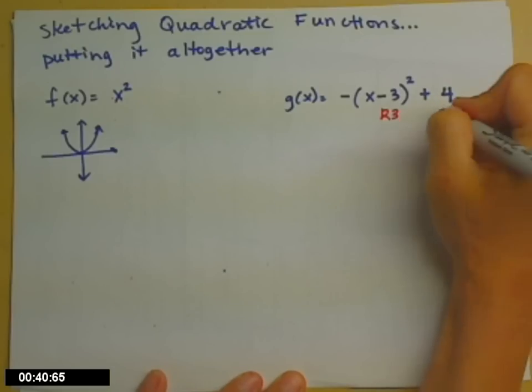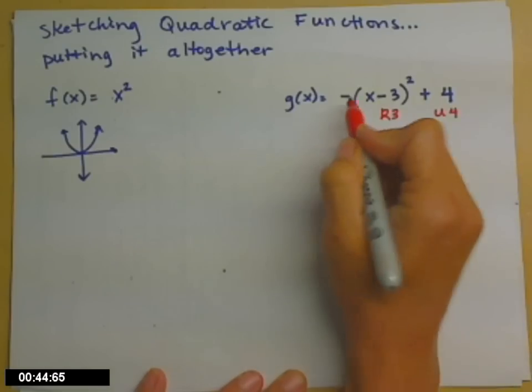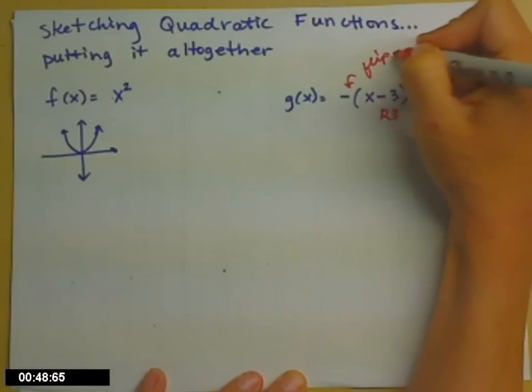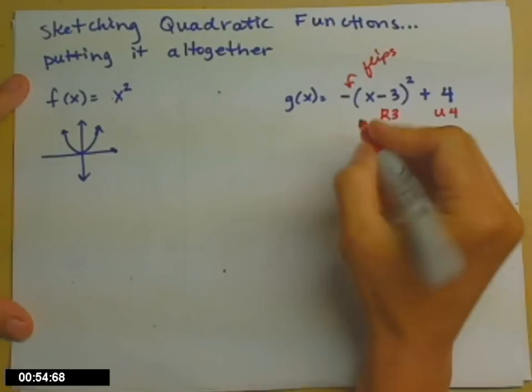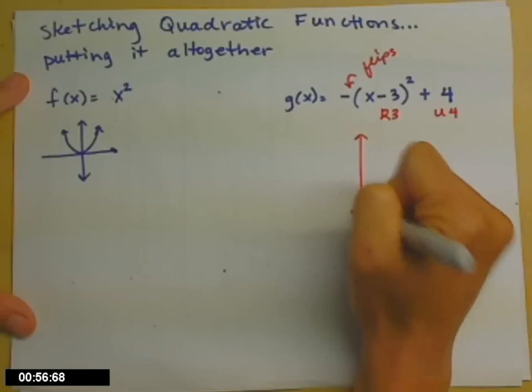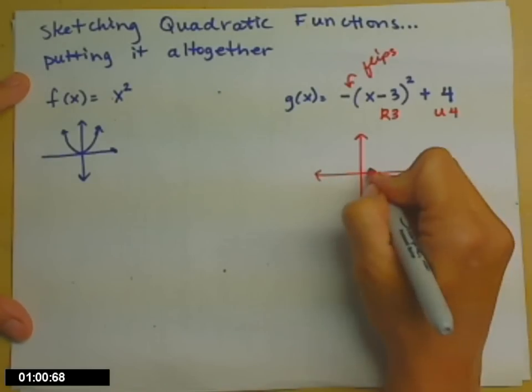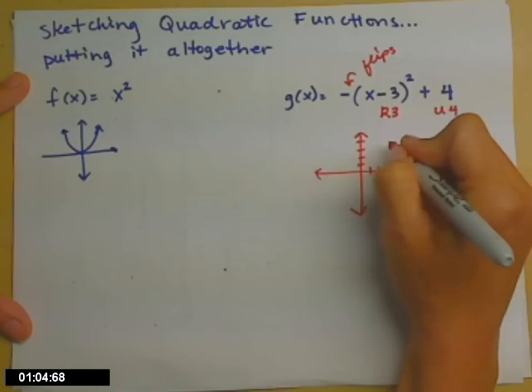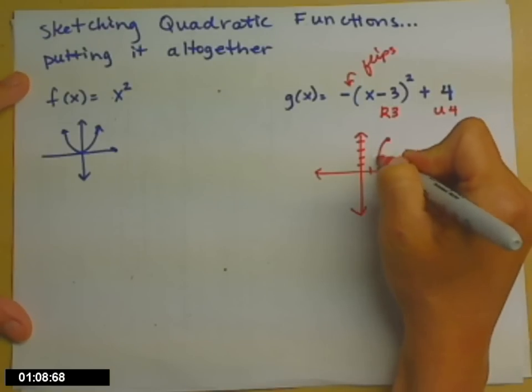This plus 4 on the outside moves it up four spaces. And this minus sign out in front flips it upside down. So let's put all of that together in a quick sketch. So we'll move right three spaces, up four spaces, and then draw an upside down parabola.